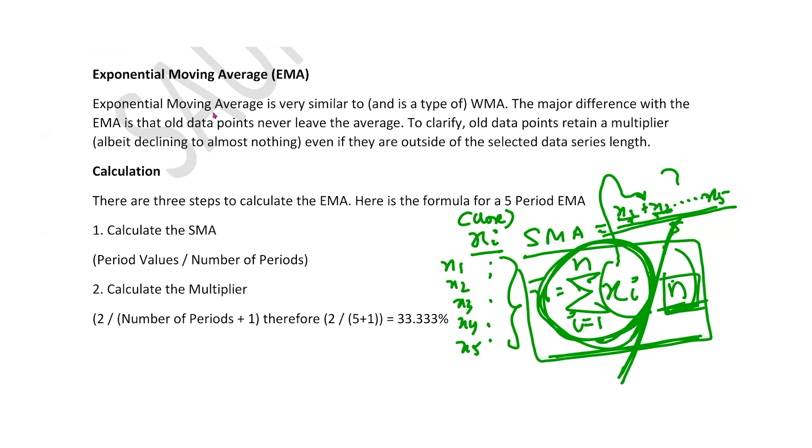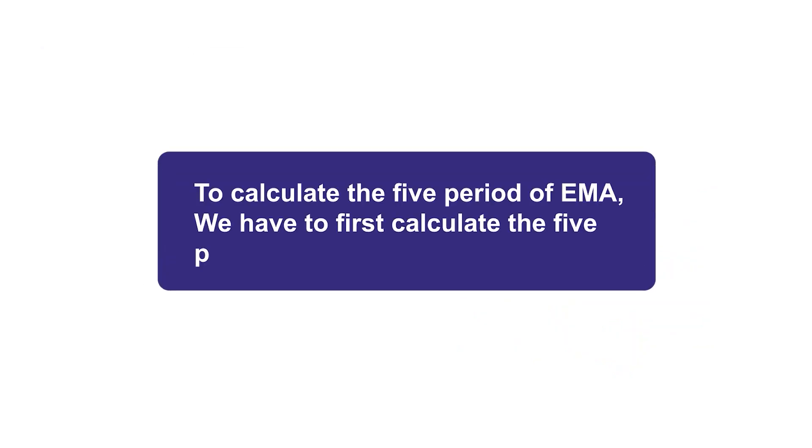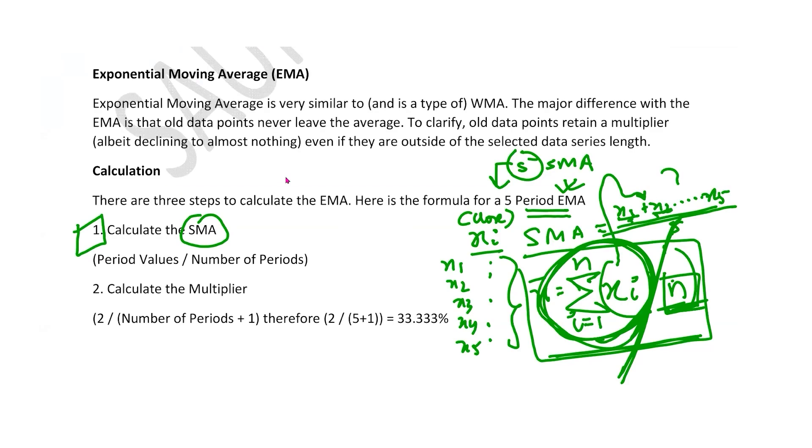That is the case in the case of SMA, but in EMA it will change. So in the same example of 5 period SMA, now I am going to discuss with you 5 period EMA. Now to calculate the 5 period EMA, the magic is that you have to first calculate the 5 period SMA. So firstly what we will do is we will calculate the SMA of the same period.